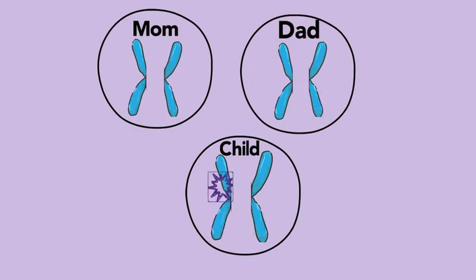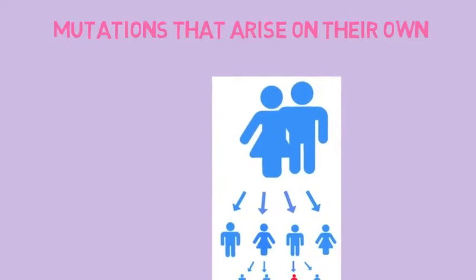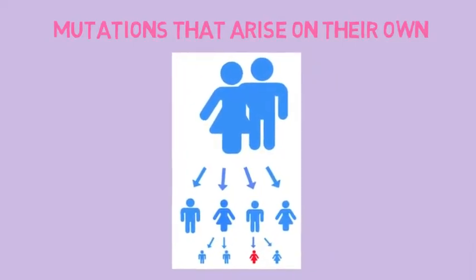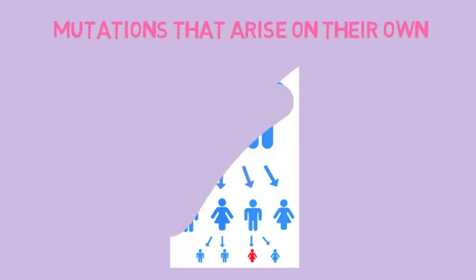This means that the mutation can either be inherited or arise on its own. Today's video is going to describe the case where a mutation arises on its own. As often found in epilepsy cases, there is no family history and the mutation arises in the child alone. This is called a de novo, or new, mutation.